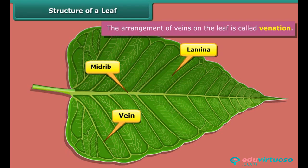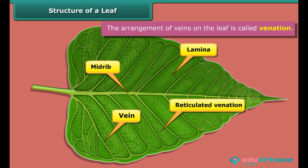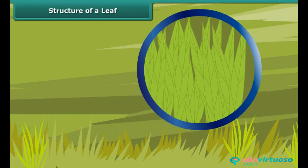The arrangement of veins on a leaf is called venation. When veins appear to branch from the midrib, the venation is called reticulated venation. When the veins run parallel to one another, the venation is termed as parallel venation. This type of venation is generally found in the leaf of grass.